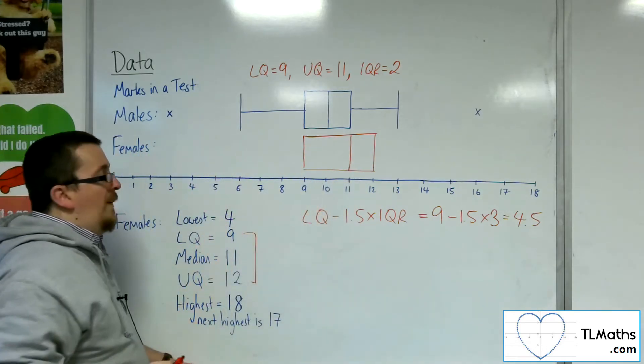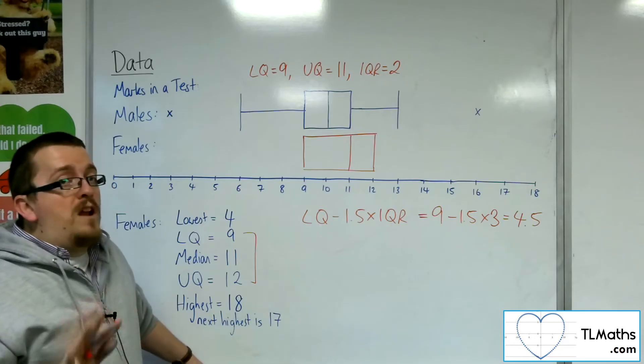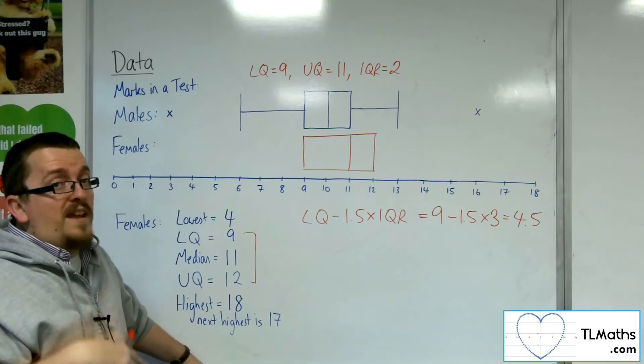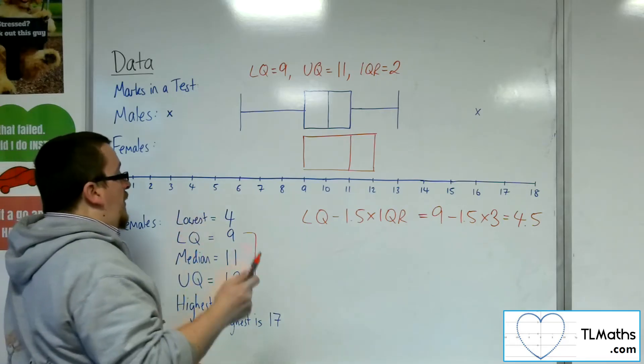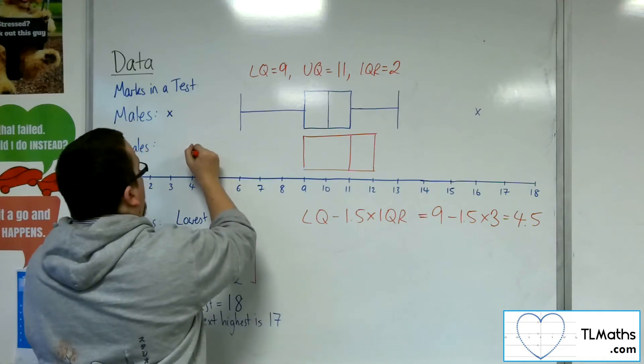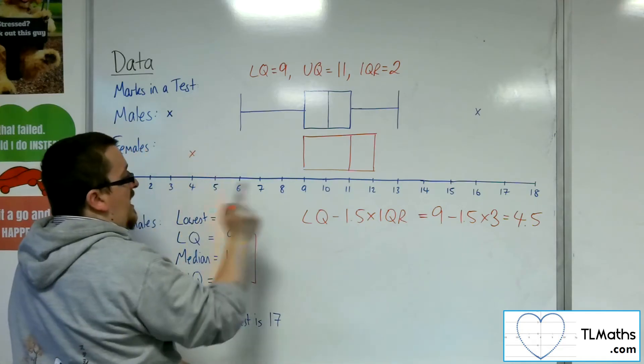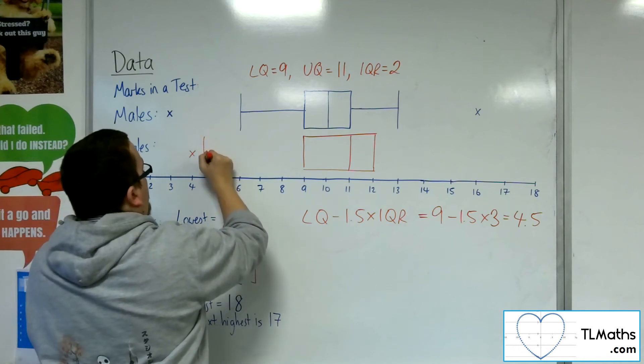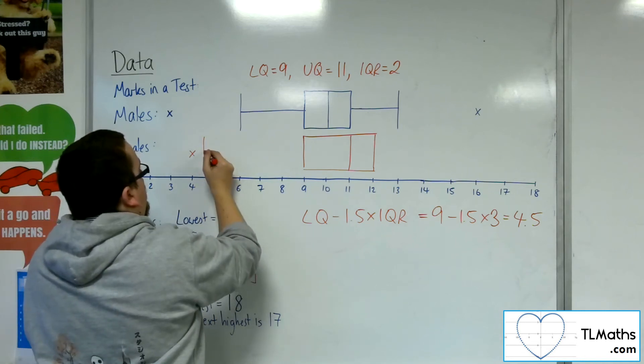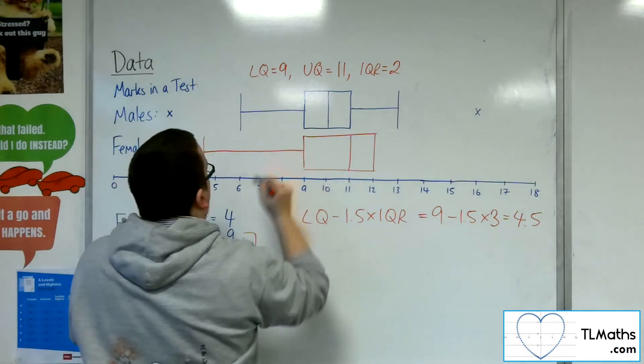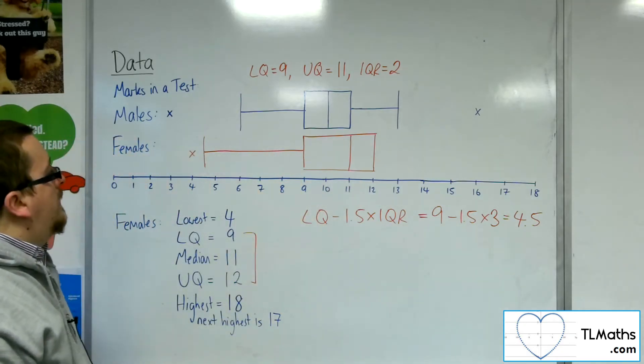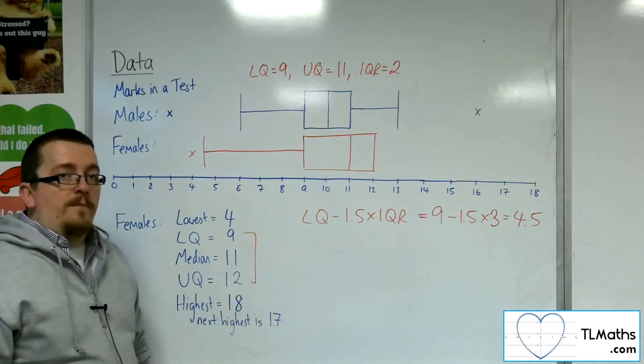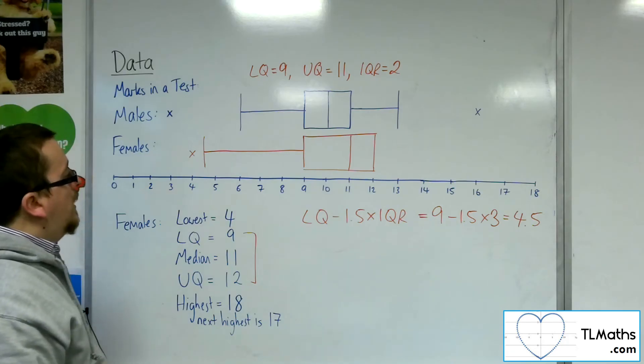Now, I know that the lowest value is 4. I don't know anything else. I don't know what the next value along is. So I know that 4 is outside of that, is lower than that boundary, and so the boundary is drawn in as the next bit of information that I have. So that is the information that we have from that.